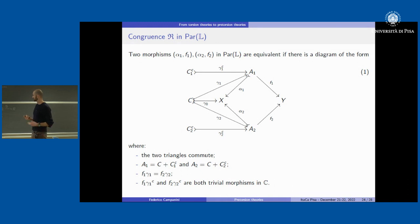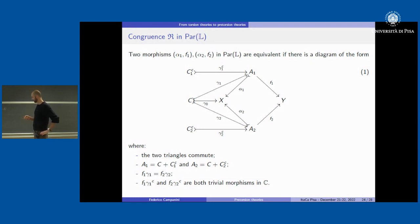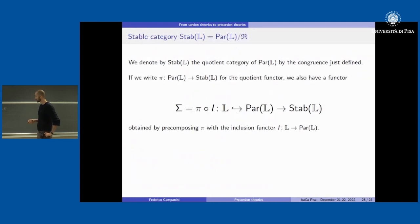Basically, we require that two morphisms agree where they are both defined, and are trivial where they are not defined together. So we have the inclusion into partial morphisms, we have a congruence, and we pass to the stable category.